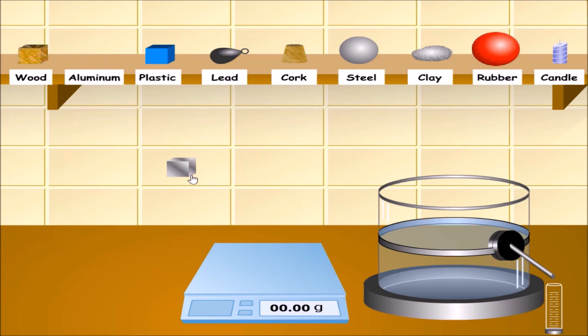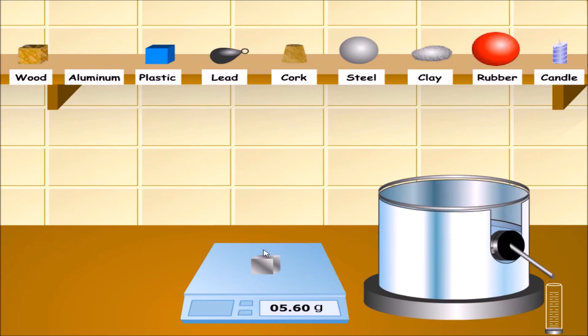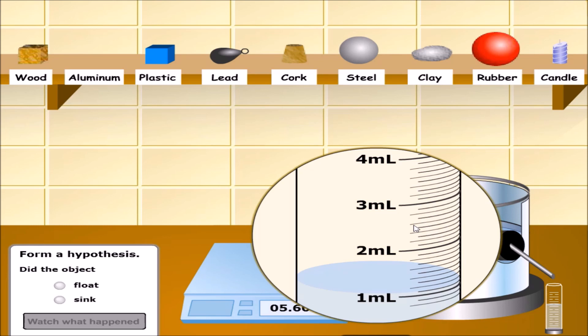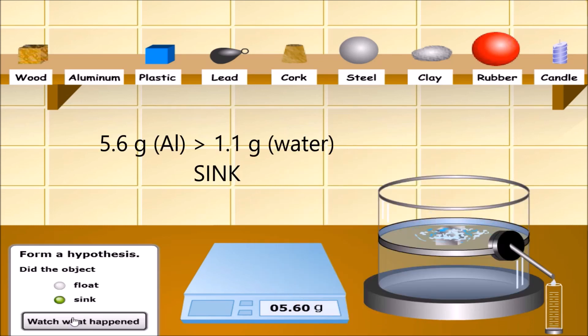How about aluminum? Let's check. Aluminum is 5.6 grams and when we put in water, it displaces 1.1 ml of water. Let's see our hypothesis. The weight of the water displaced is less than the aluminum. It will sink.